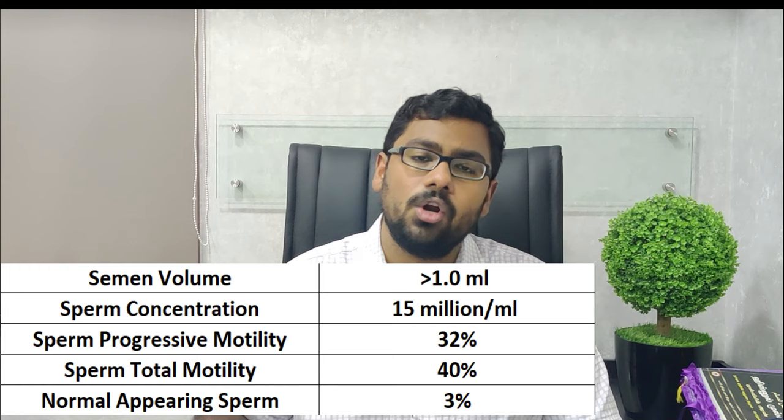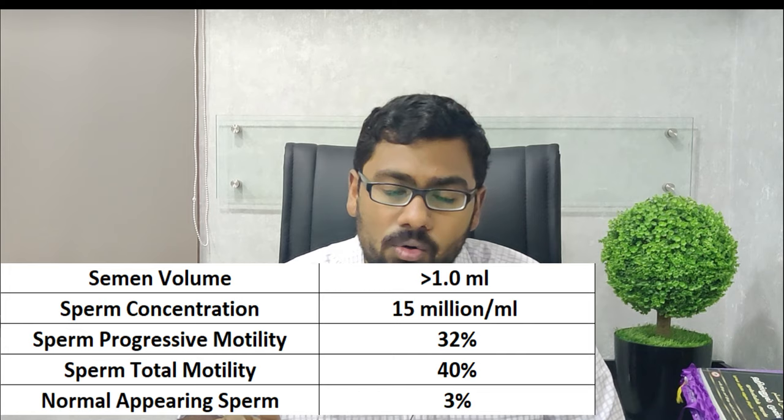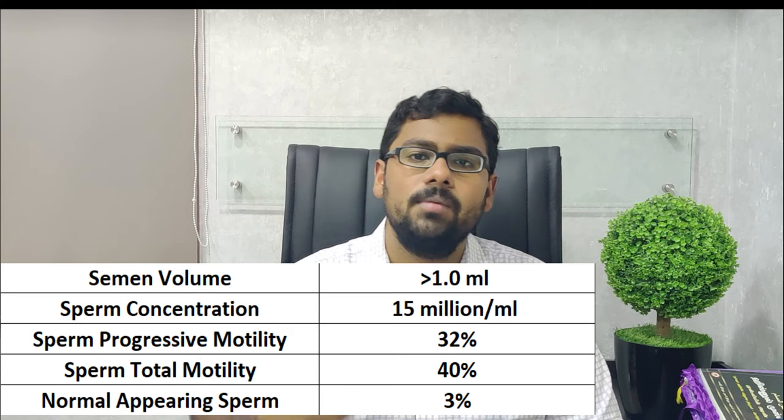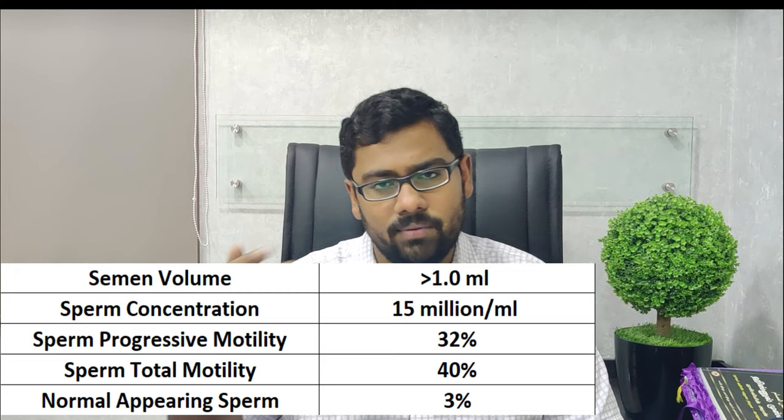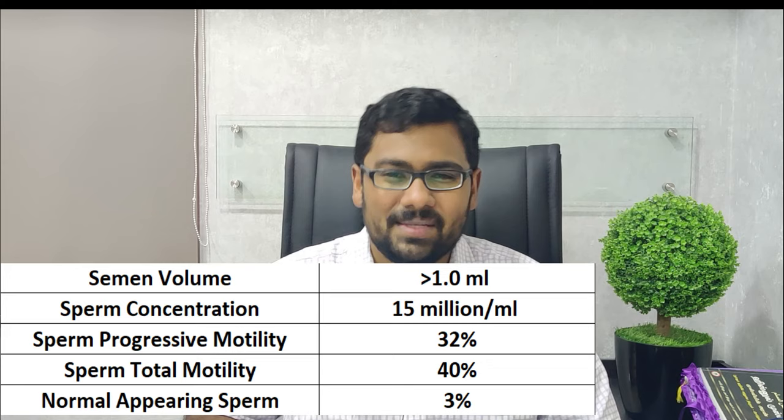To summarize, the values are presented in the table on the right. A typical normal semen analysis report should show: semen volume greater than 1 ml, sperm count of 15 million per ml or more, progressive motility more than 32%, total motility more than 40%, and normal forms more than 3%. For individuals with values in this range or above, the chance of pregnancy in the first year of marriage is usually quite high.